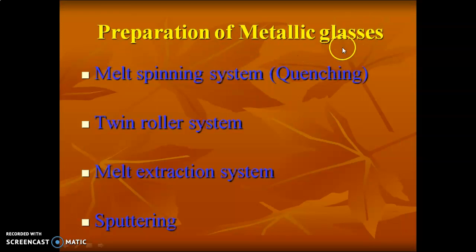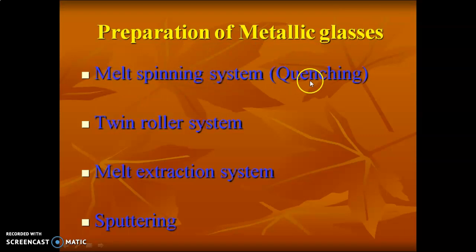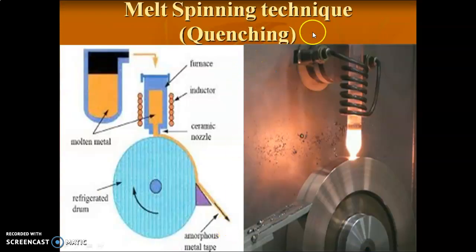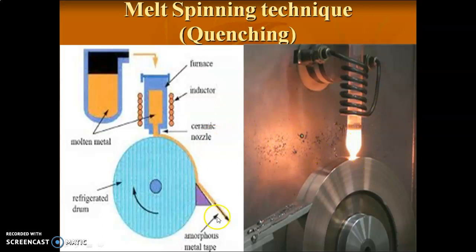The preparation methods of metallic glasses — there are several methods: melt spinning system, quenching, twin roller, melt extraction, and sputtering. Melt spinning is essentially quenching. Quenching is nothing but sudden cooling — sudden cooling is called quenching.